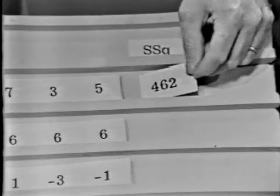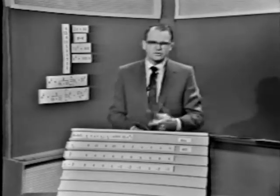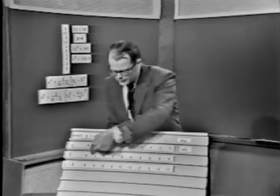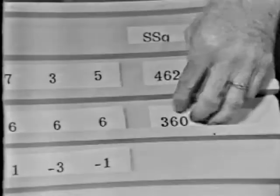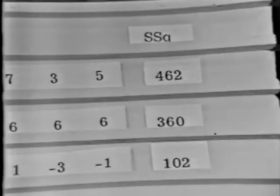In an analysis of variance table, we have various columnar classifications. One of them is called the sums of squares column. The first thing I'm going to do is take the sum of squares of all the individual observations, and that equals 462. I'm going to take the sum of squares of all these entries, that's six squared ten times, so the sum of squares here will be 360. Finally, I'm going to take the sum of squares of all those residuals, and that equals 102.